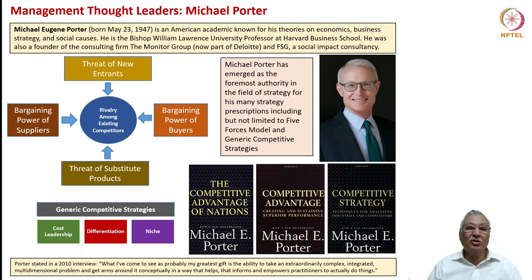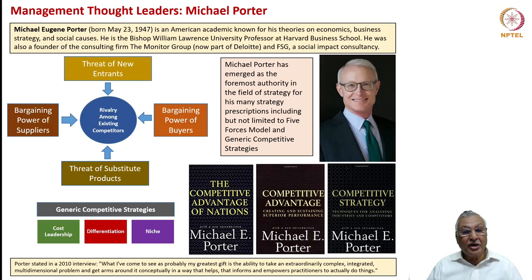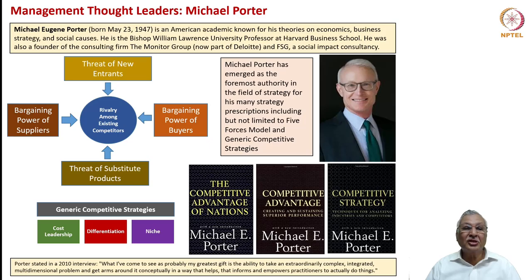What you see on the left side is the Five Forces model, wherein every firm must consider five forces: the threat of new entrants — new competitors who could enter the industry; the bargaining power of suppliers; the bargaining power of buyers, such as strong distributors and wholesale buyers in the US pharmaceutical industry; the threat of substitute products, for example the iPod substituted by the iPhone; and rivalry among existing competitors. These are the five forces a firm must reckon with while crafting business strategy.